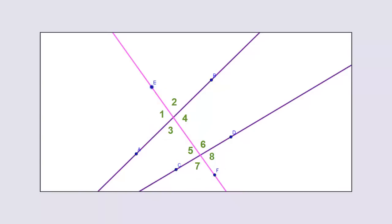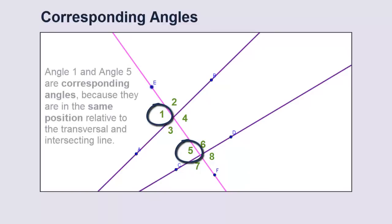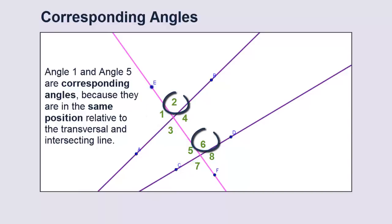When the angles are in the same position relative to the transversal — for example, angle one and angle five are both to the left of the transversal and above their respective intersecting lines — we call these corresponding angles. A transversal intersecting two lines forms four separate pairs of corresponding angles.